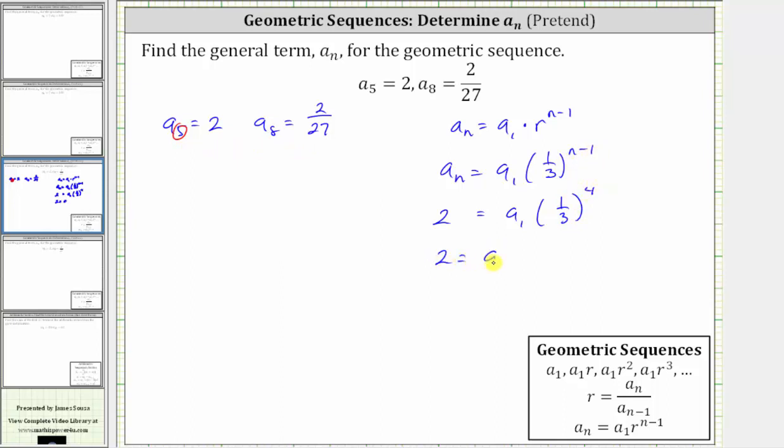Which gives us 2 equals a_1 times 1/3 raised to the fourth power is equal to 1 divided by 81, or 1/81.